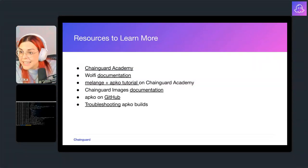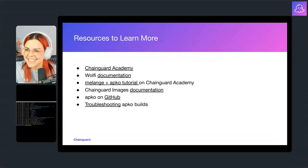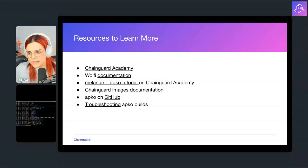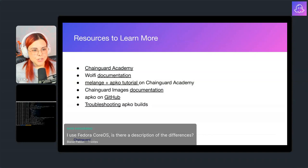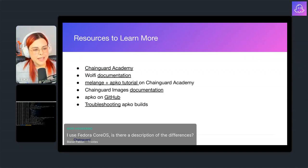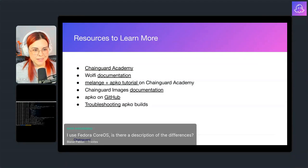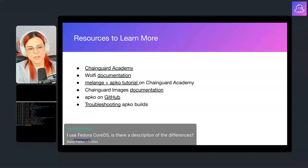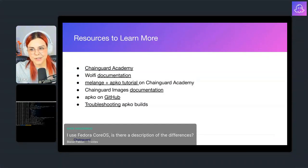I'm opening the Q&A. First question: 'I use Fedora CoreOS — is that a description of the differences?' I've never used it as a base image, so I can't say the differences specifically, but in general Wolfi is a very tiny layer where you add only what you want. It has only what's strictly necessary, and you cannot use it in situations other than containers — it's very strict. That's probably the key difference from all other distros.